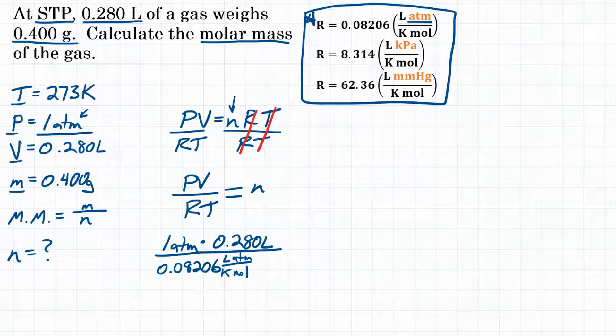That is our R value, which goes in the bottom of our fraction. We're going to multiply that by temperature, which is 273 Kelvin. Remember we're dealing with gas laws, so we have to have our temperature in Kelvin.